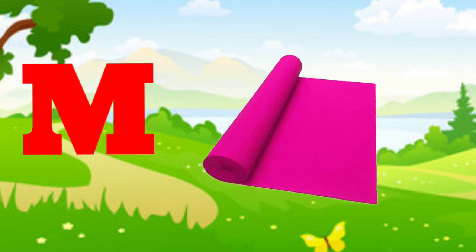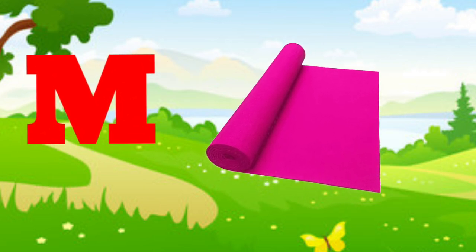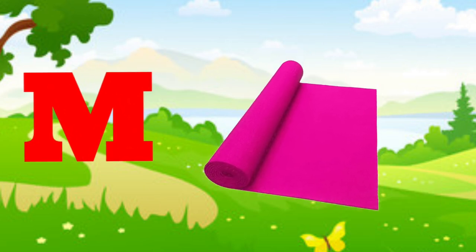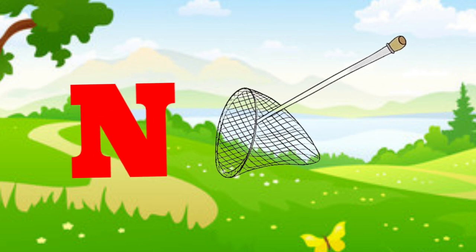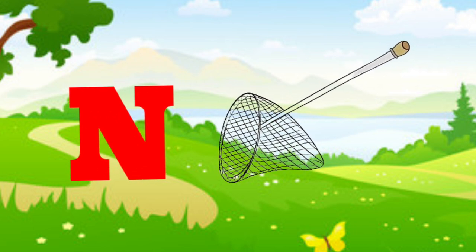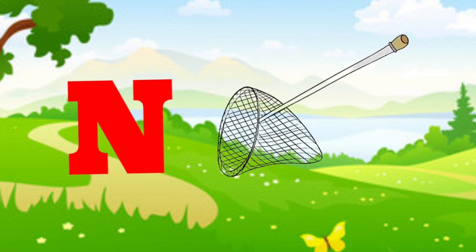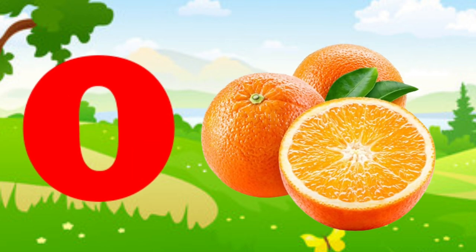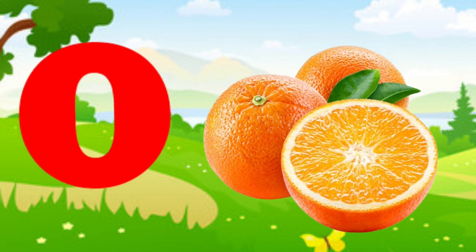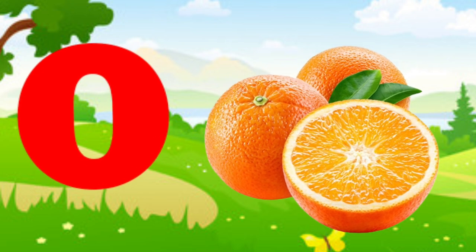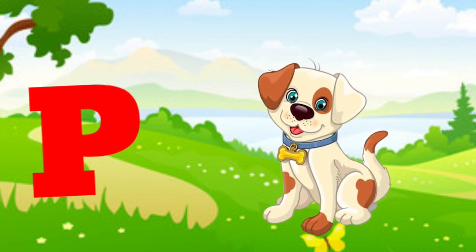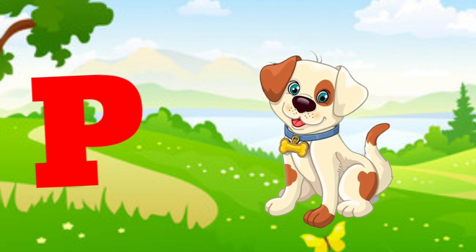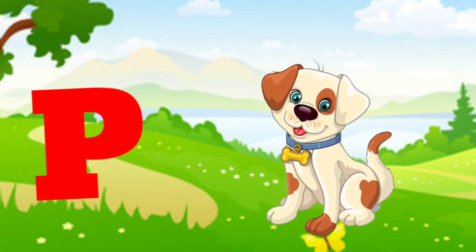M is for mat, m-m-mat. N is for net, n-n-net. O is for orange, o-o-orange. P is for pet, p-p-pet.